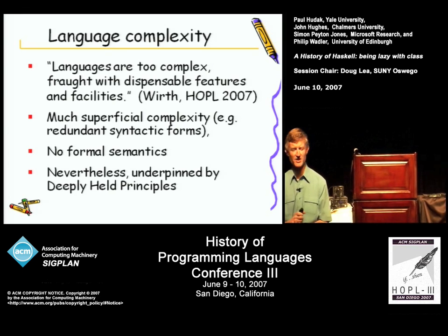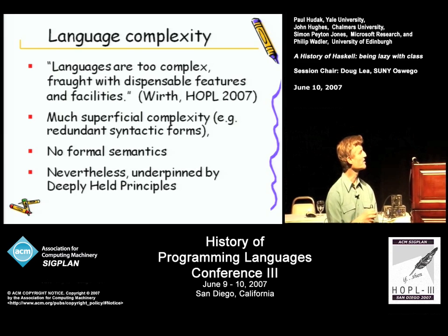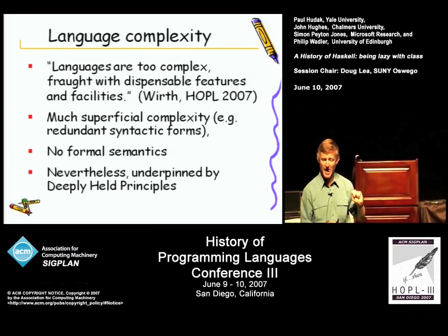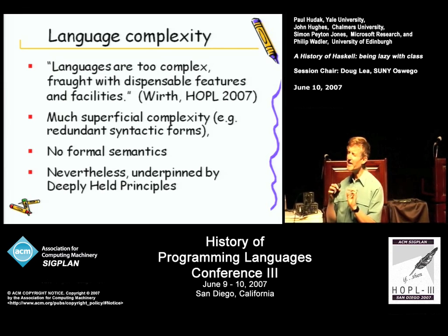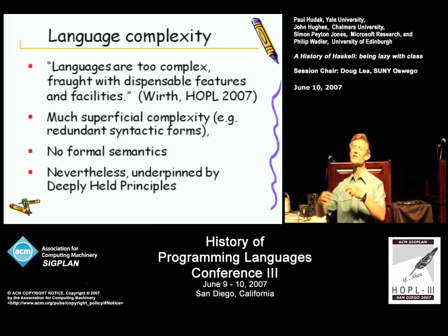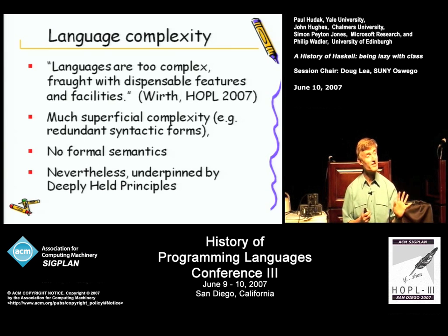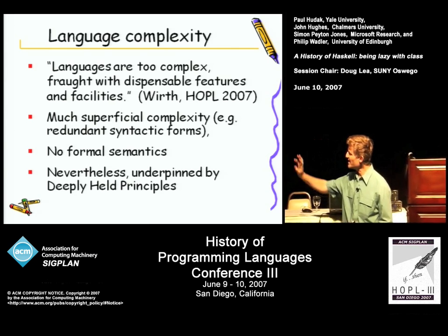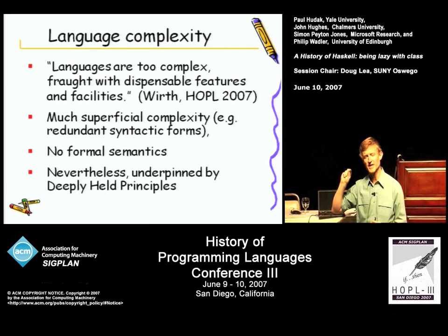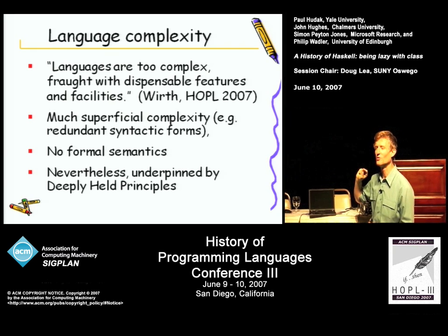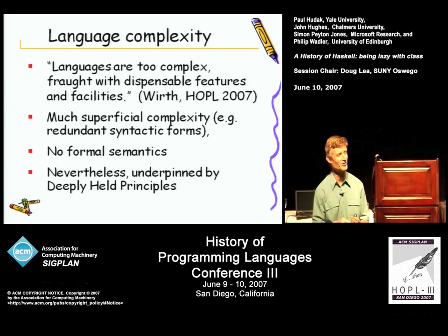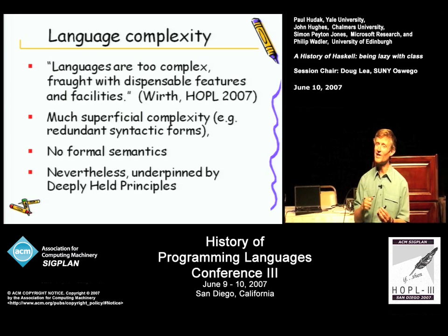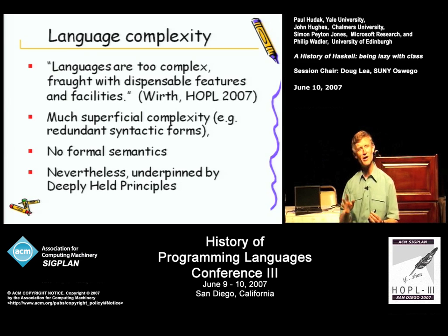I wanted to say a little bit about language complexity. Languages are full of dispensable complexity — and one could criticize Haskell for that. There's certainly a lot of superficial complexity: all this type classes stuff, lots of mutually redundant syntax, and very rich data types. The Haskell report is pretty fat. But at the same time, it is underpinned by some fairly deeply held principles. Not so deeply held that we actually wrote a formal semantics — that was one of our initial goals and one we abjectly failed to meet. I would love to have a formal semantics, but it also makes you less nimble.